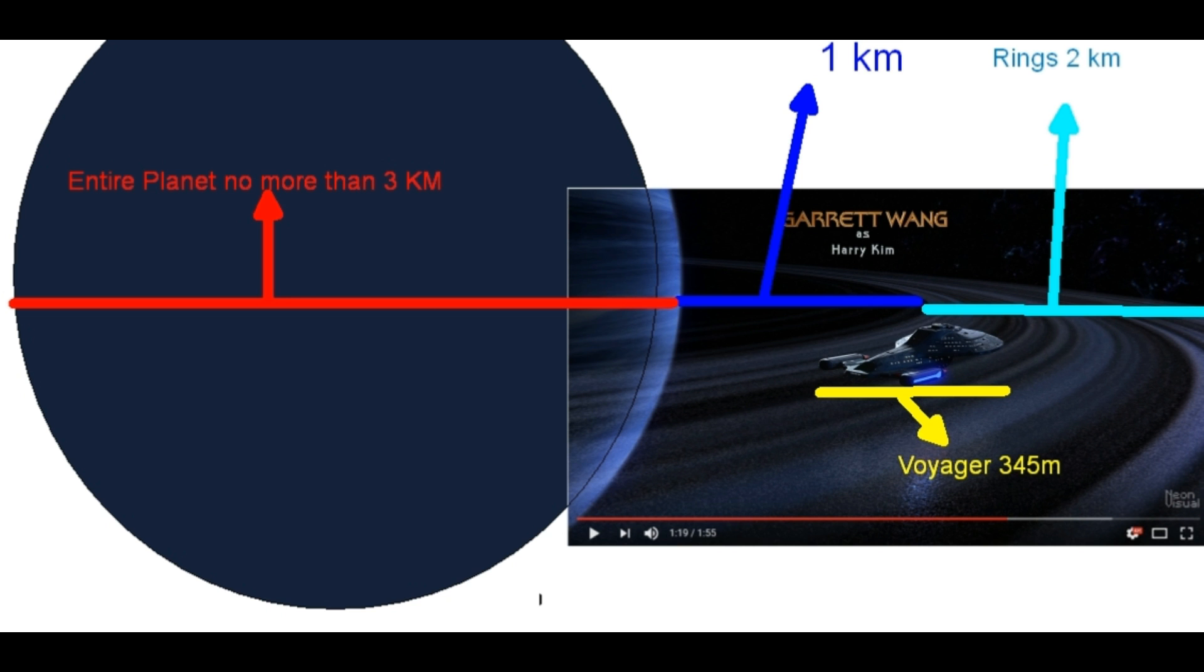So, gas giants of three kilometers in size do not exist. Even rocky planets of three kilometers in size do not exist. A planet has to be at least 500 kilometers in size to get a round shape. Otherwise, it will be an irregular planet.